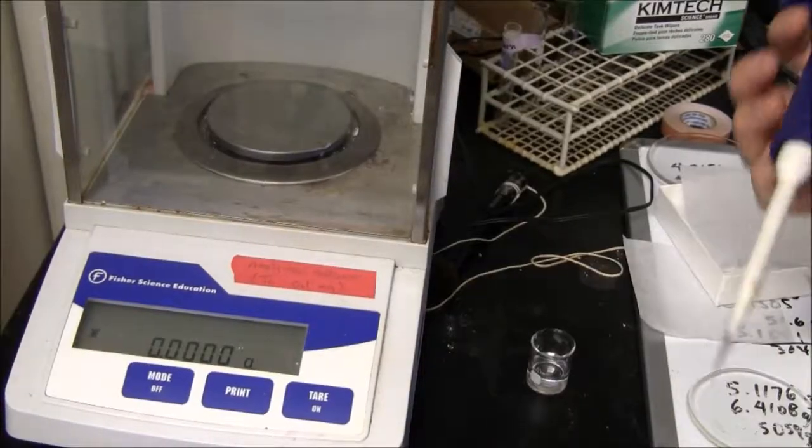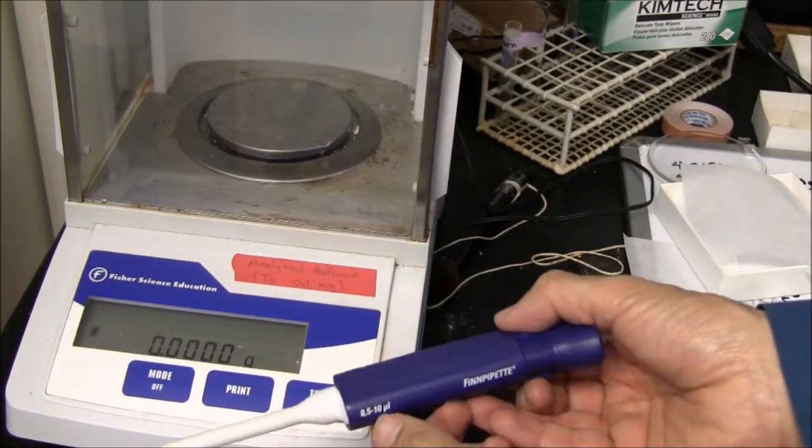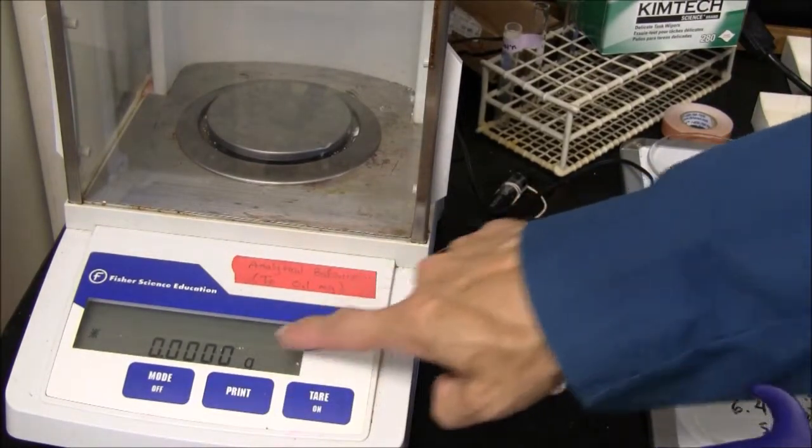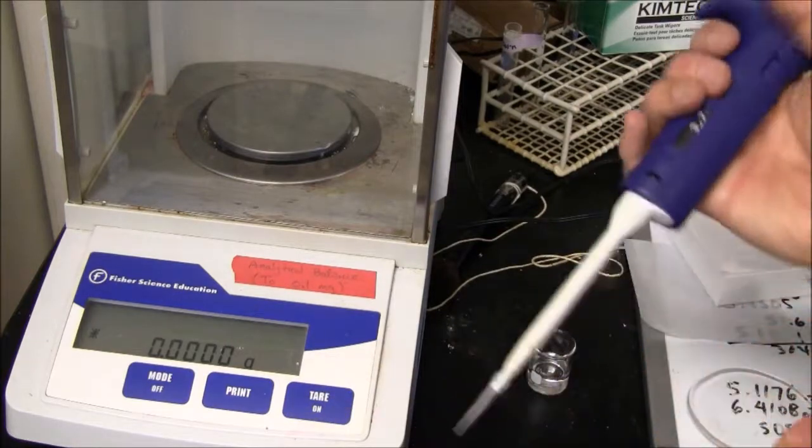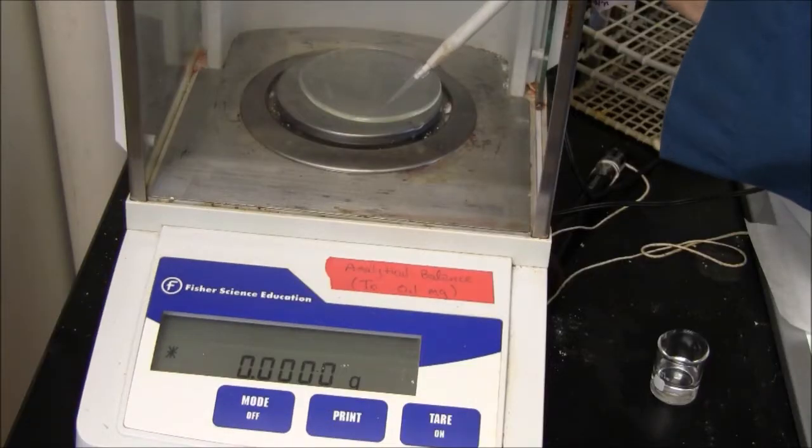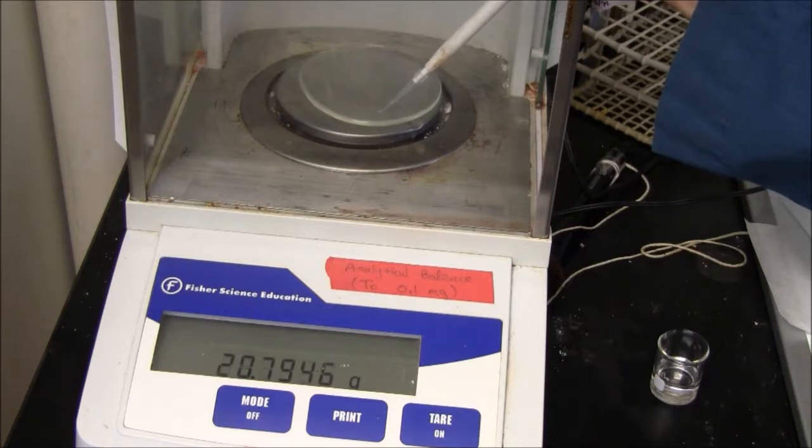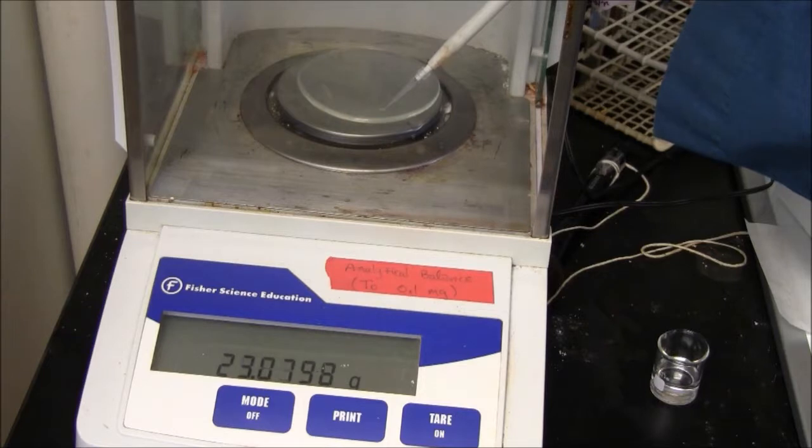To measure your pipetting accuracy with a P10, you need to use an analytical balance that has one more decimal place. In this case, I will touch the pipette tip to the glass, expel the 2.8 microliters.